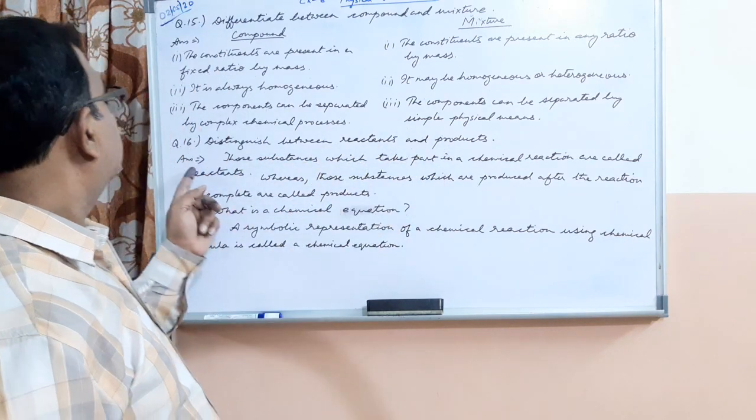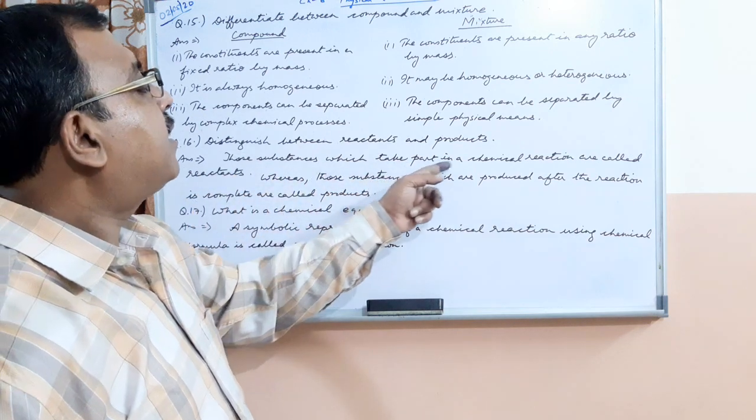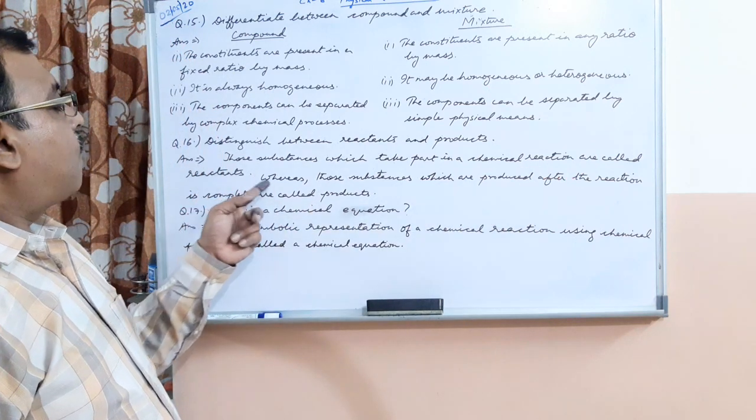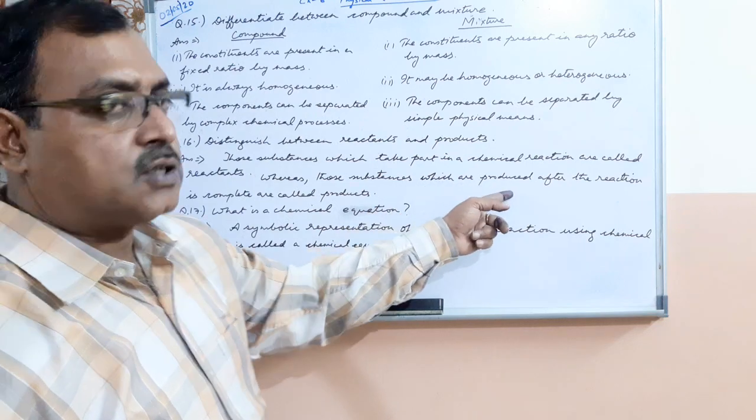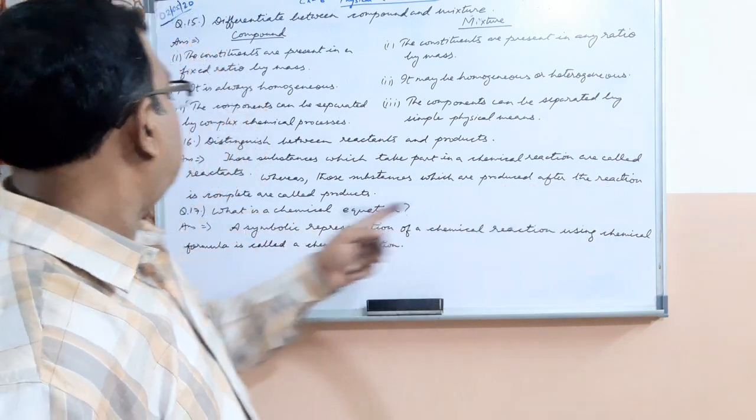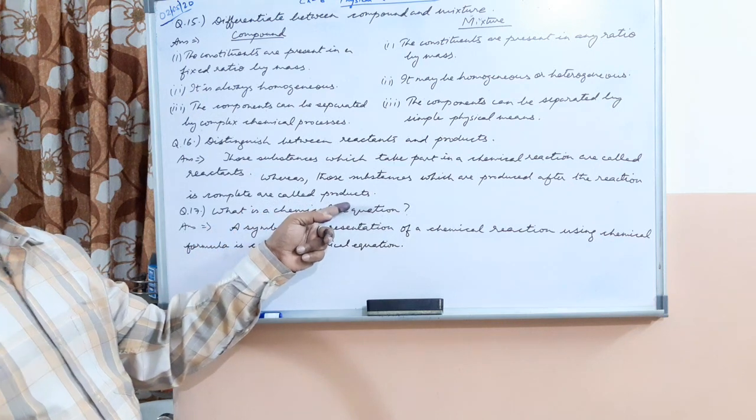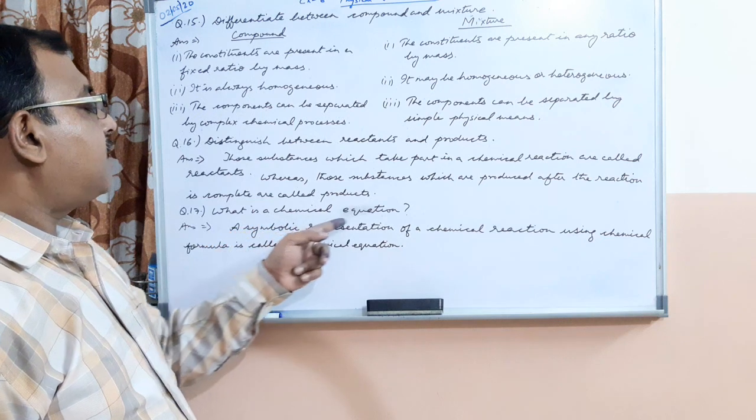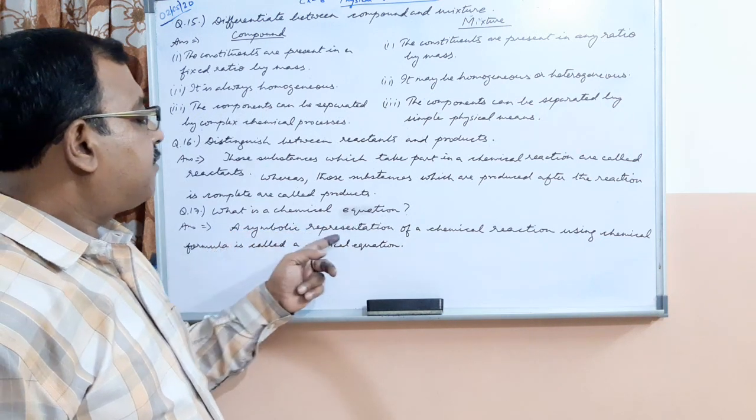Answer: those substances which take part in a chemical reaction are called reactants, whereas those substances which are produced after the reaction is complete are called products. Next question: what is a chemical equation?